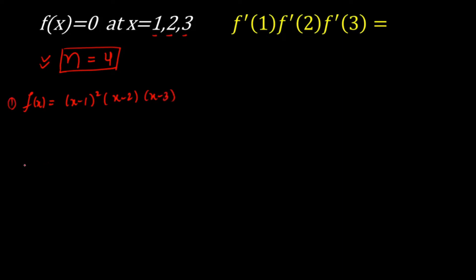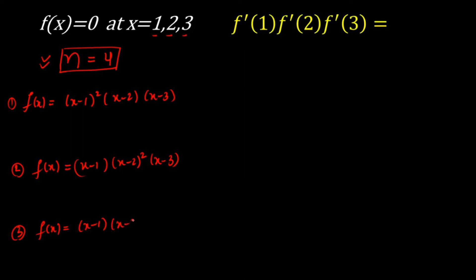Case 2: the repeated root is x = 2, so f(x) = (x−1)(x−2)²(x−3). Case 3: the repeated root is x = 3, so f(x) = (x−1)(x−2)(x−3)². We now have sufficient information to calculate the product of derivatives, and I'll show using graphs that f'(1)·f'(2)·f'(3) is the same in all three cases.